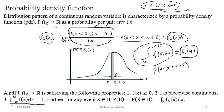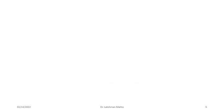A fourth property: if x takes value from a subset B of its range, we compute the probability of event B by integrating the density function over B. Since x is continuous, B would be an interval or union of intervals. So probability P(X ∈ B) = integral of f(x) over B. This is how probability of any event is computed for continuous random variables.